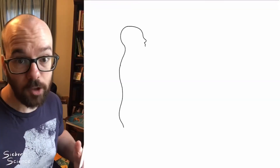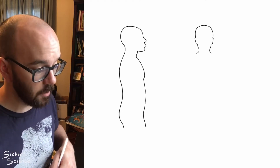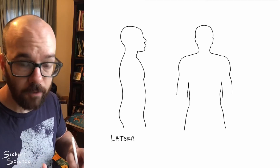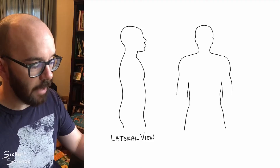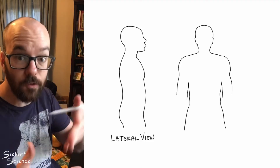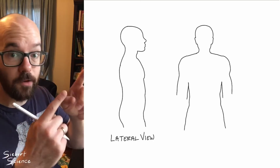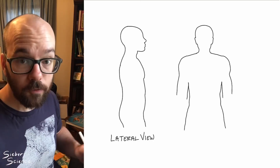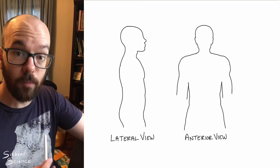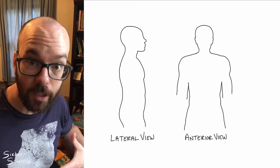Let's start with an outline of the human body. We're going to have two pictures here. We have a lateral view on the left, which will be a sagittal cross-section, kind of as if you're viewing it from the side. If you need to review human body planes, check out my video on that. Our other view is an anterior view, as if we're looking from the front, or a frontal plane of the body.